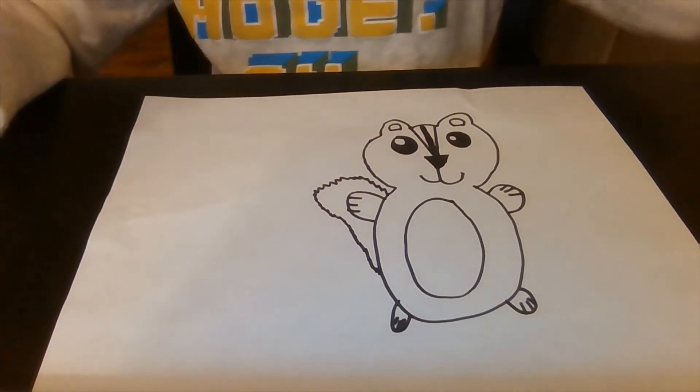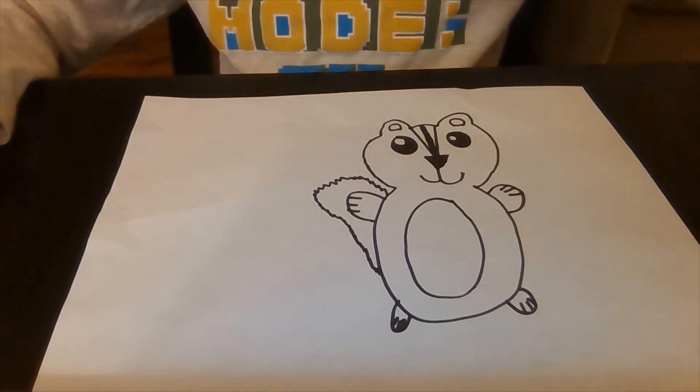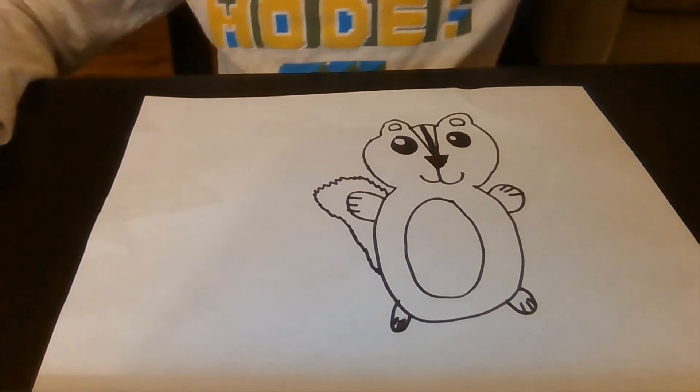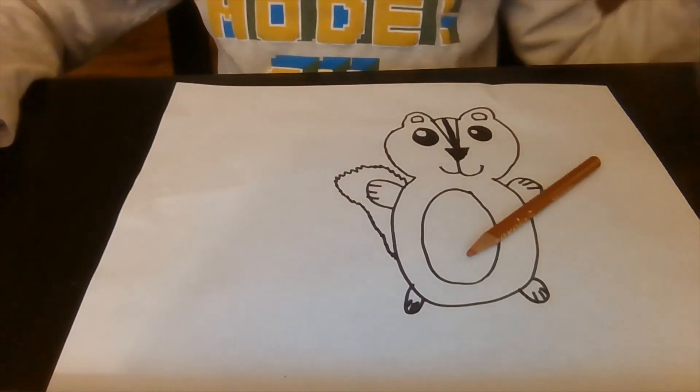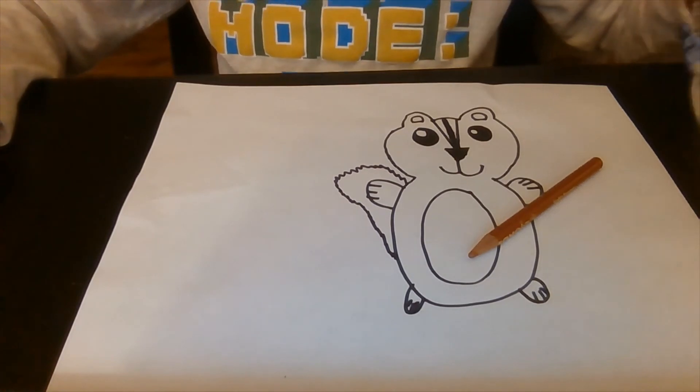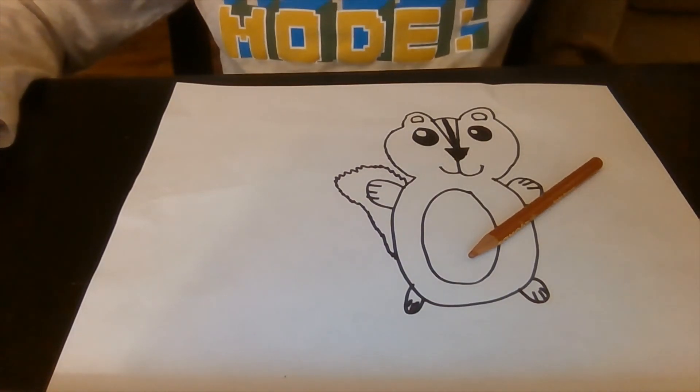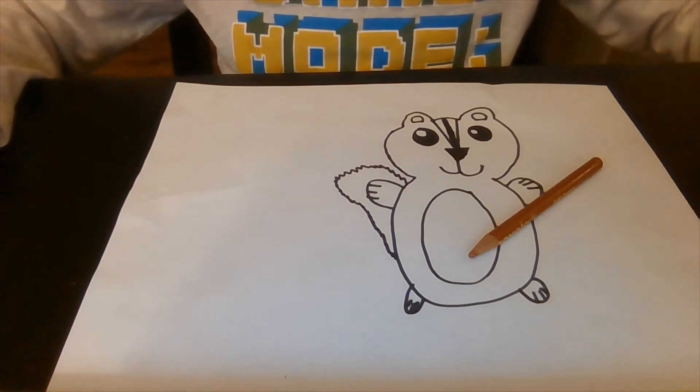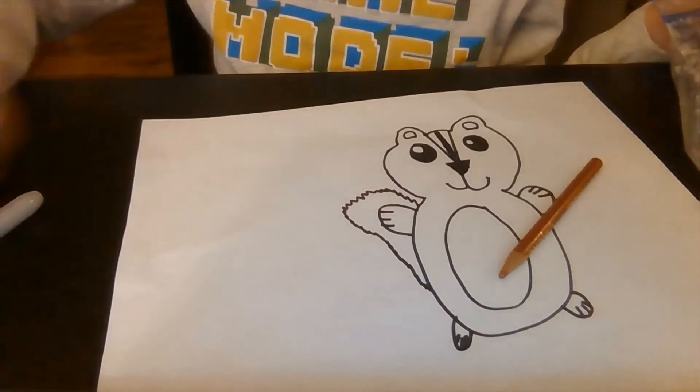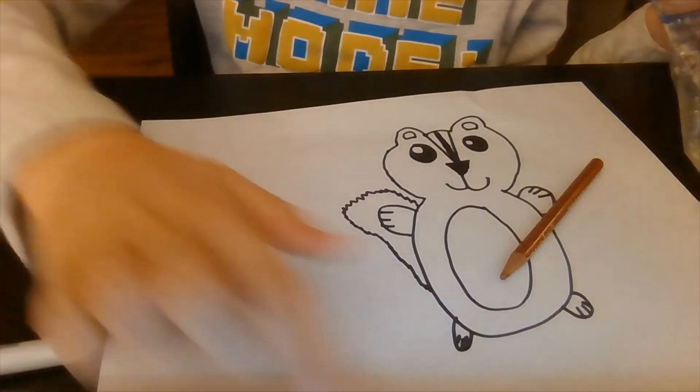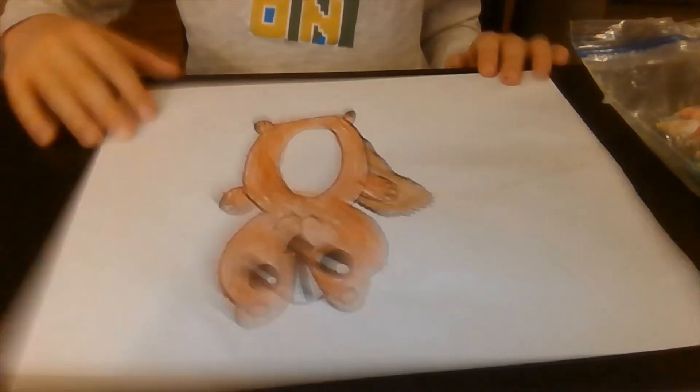I'm going to color him now. I'm going to use colored pencils again, and I'm going to use some brown and pink for his ears. I'm just going to gather the colors I need, and then he'll be ready. So now our little chipmunk is done being colored.